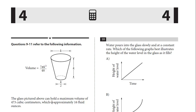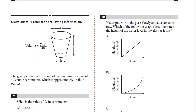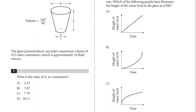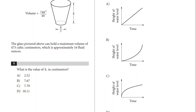The glass pictured above comes with a maximum volume of 473 cubic centimeters, which is approximately 16 fluid ounces. We have the formula for volume. Let's take a look at the first question, number 9: what is the value of k?